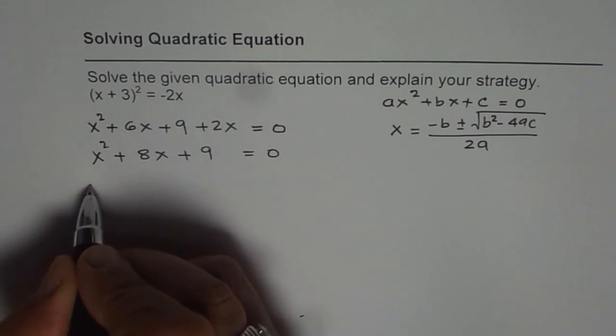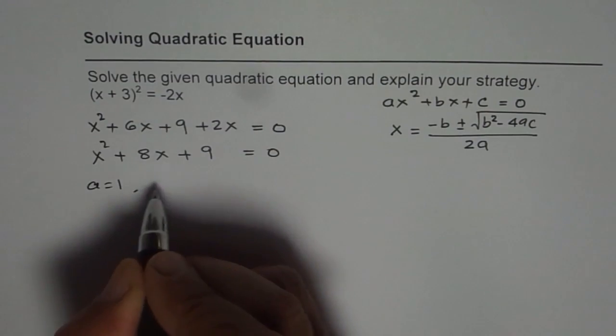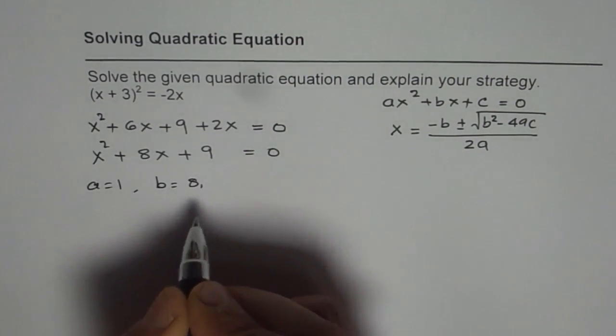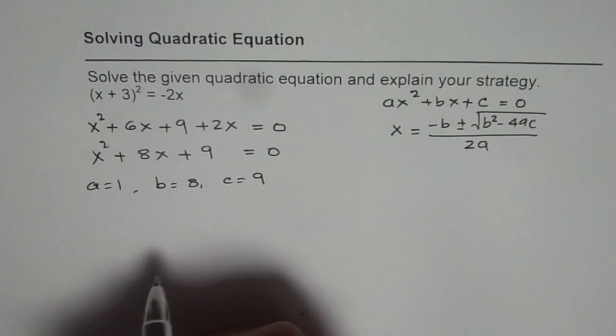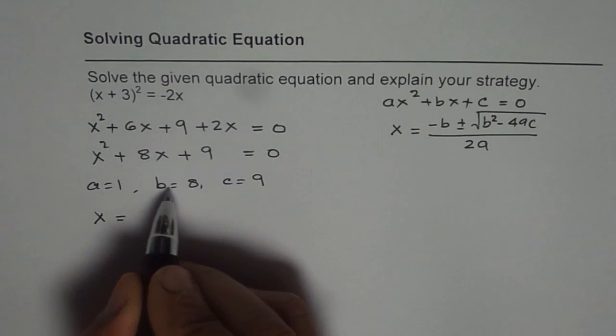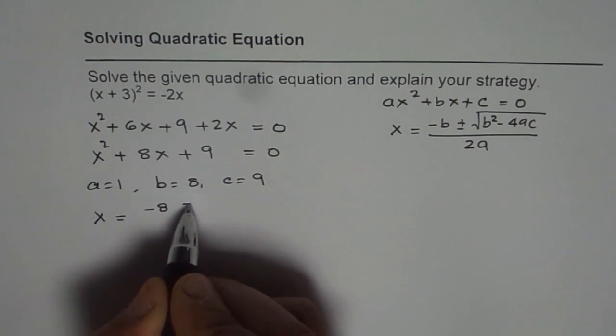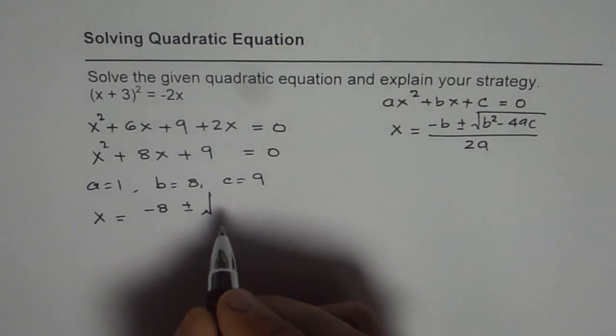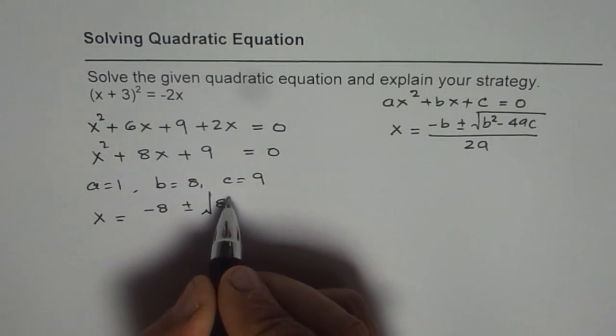Now here in this position, a is 1, b equals 8 and c equals 9. So using quadratic formula which is right there, we can say x equals -b which is -8 plus minus square root of b² - let me write b² first,